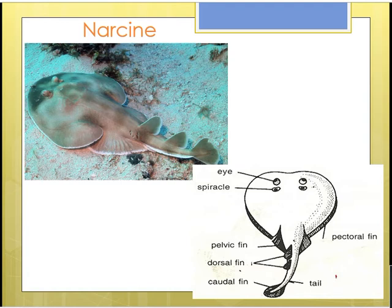Narcine is popularly known as the electric ray because of the presence of special organs called electric organs. These electric organs can generate electric currents which help this organism in both offense as well as defense. It is a bottom-dwelling organism usually seen inhabiting the warmer waters of the Indian Ocean, Red Sea, Pacific, and Atlantic Oceans.